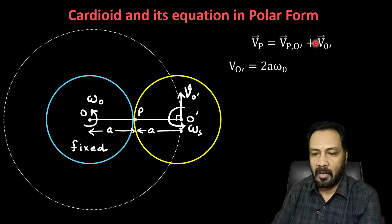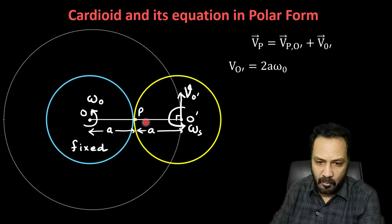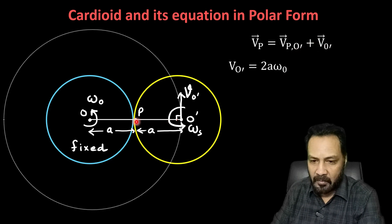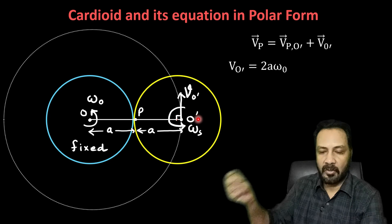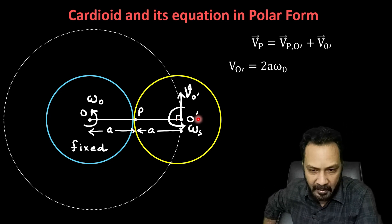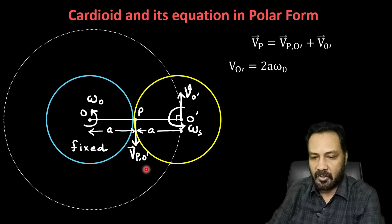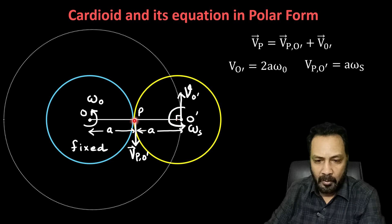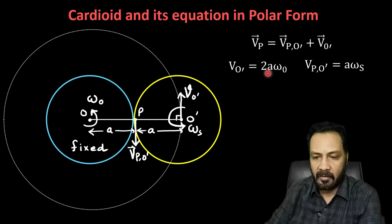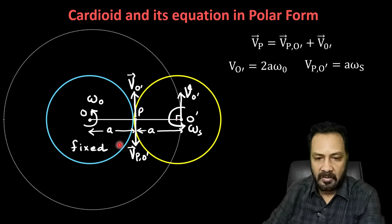Now I want to write the velocity of point P. From the concept of relative velocity, velocity of P equals velocity of P with respect to O' plus velocity of O'. Looking at point P from O', the line O'P is rotating with spin angular velocity omega_s, so the velocity of P with respect to O' is v_PO' = a × omega_s. The total velocity of P is the vector sum of these, and v_O' = 2a × omega_o.